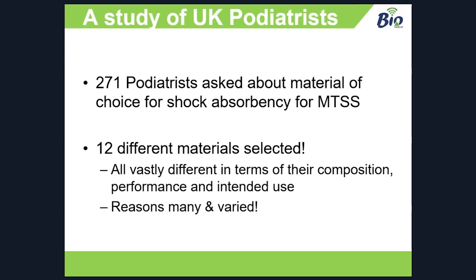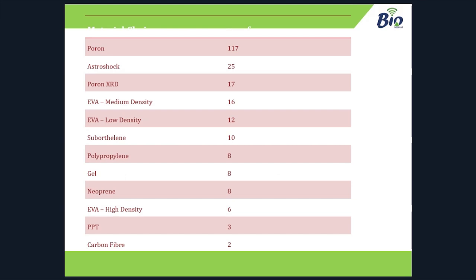The reasons people had chosen these materials were many and varied — a lot more diverse than I'd initially expected. The list included Poron, Astroshock, Poron XRD, EVA of all densities — and bearing in mind we're talking about shock attenuation, some people said they'd use high density EVA — as well as polypropylene and even carbon fibre, which has quite hard properties. So there was quite a variation, and it kind of highlighted a knowledge gap within our own profession.